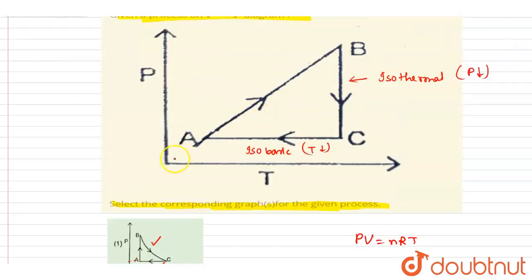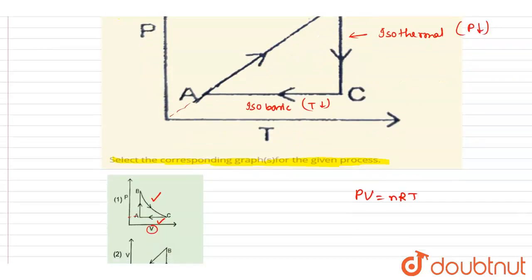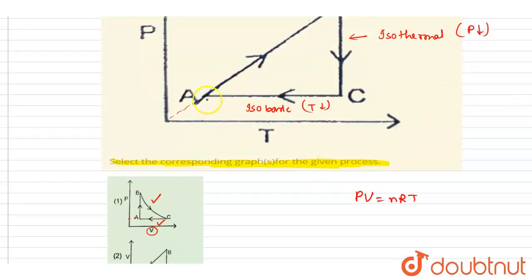Now if you see this process, it is an isochoric process. If you see here, the pressure and temperature slope is constant. So what we will say here is constant. So this is an isochoric process.